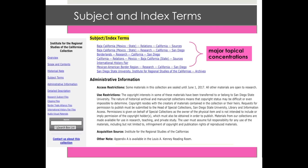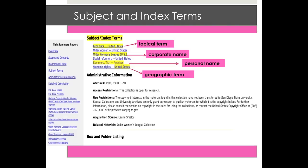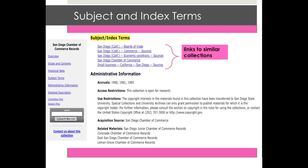Use the subject and index terms to get a broad idea of the content of a collection. These terms are assigned to reflect major topical concentrations within the collection, and are like the subject headings you see in records in the library catalog. These access points can include personal names, corporate names, geographic terms, and topical terms. In an online finding aid, these index terms can often link to a list of other collections which also relate to these subjects. Subject terms can be a great gateway to finding similar collections on a particular topic.